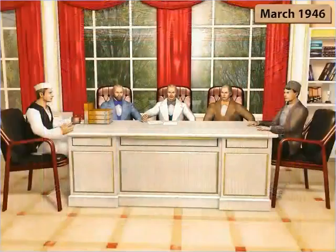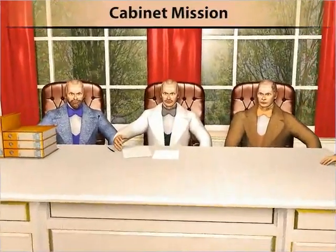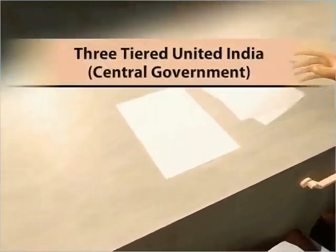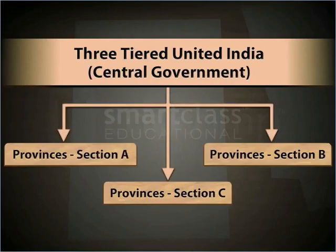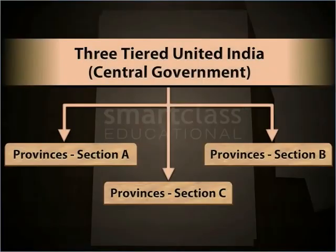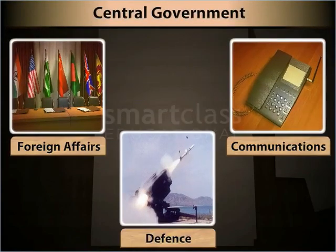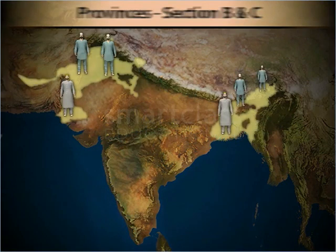In March 1946, a three-member cabinet mission arrived in Delhi to examine the demands of the Muslim League. The mission toured India for three months and recommended a united India with a three-tier confederation: a central government with existing provinces grouped into three sections — A, B, and C. The central government would control foreign affairs, communications, and defense. Section A included Hindu-majority provinces, while Sections B and C included Muslim-majority provinces of the northwest and northeast, respectively.